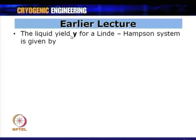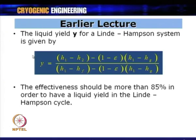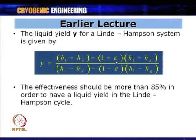The liquid yield y for the Linde-Hampson system is the ratio m_dot_f / m, the mass fraction that gets liquefied. The expression is: y = [h1 − h2 − (1 − ε)(h1 − hG)] / (h1 − hG). When epsilon equals 1 (100% effective), this reduces to y = (h1 − h2)/(h1 − hF), as the correction term goes to zero. This shows how sensitive the value of y is to epsilon.